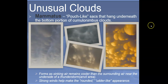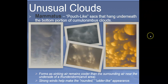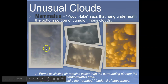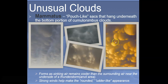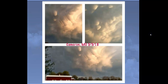Mammatus clouds are funny-looking pouch-like sacks that hang underneath the bottom of a cumulonimbus cloud. They're named for their resemblance to the mammary glands of a cow. They form as sinking air remains cooler than the surrounding air, and strong winds give them that rounded, udder-like appearance. In May in Cameron, Missouri, some mammatus clouds were actually spotted — not a very common thing.